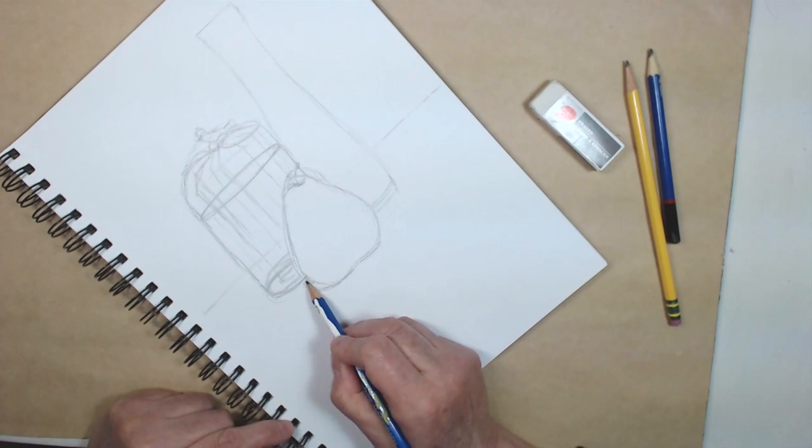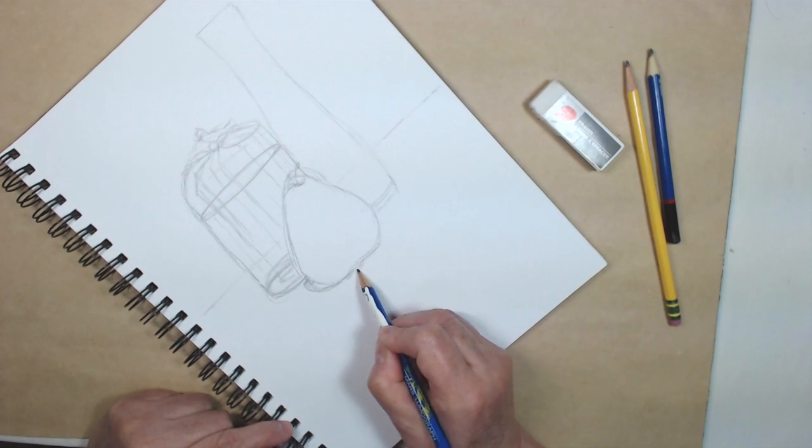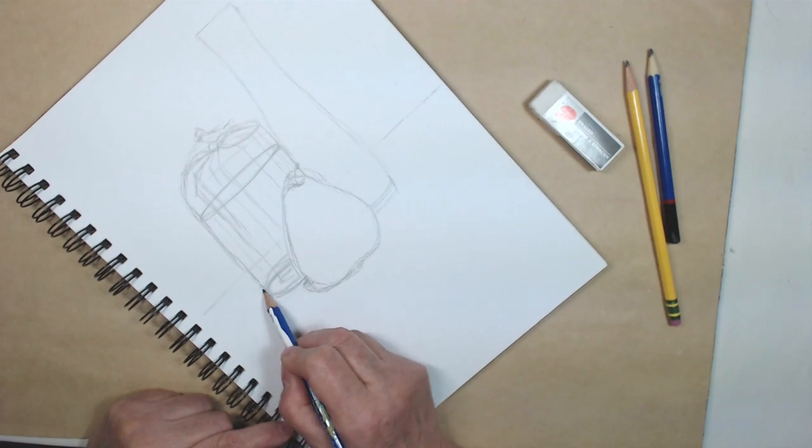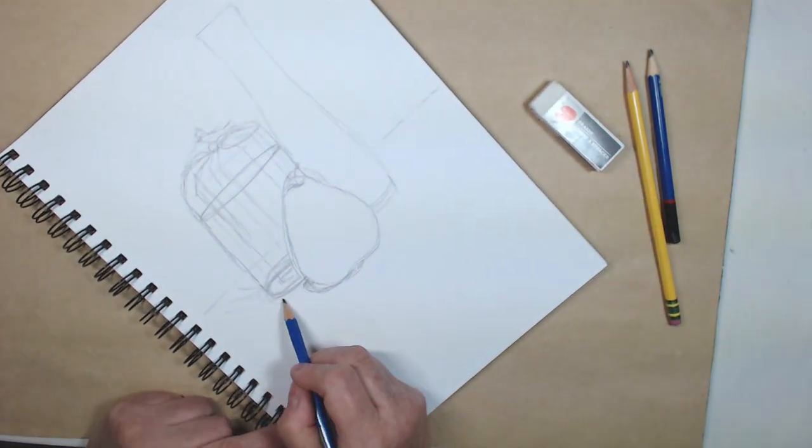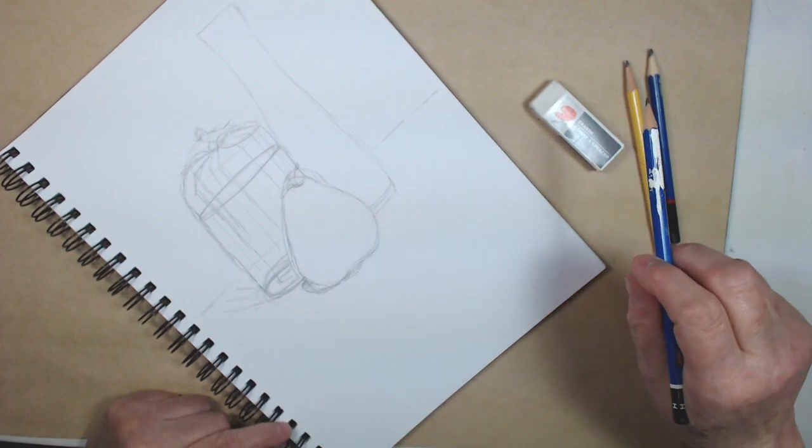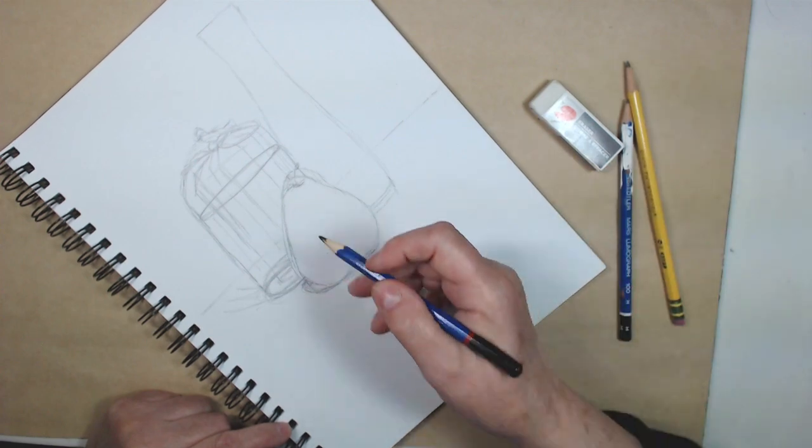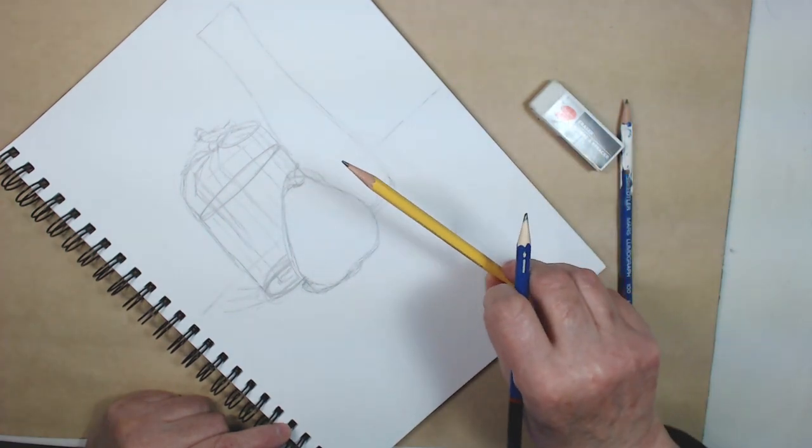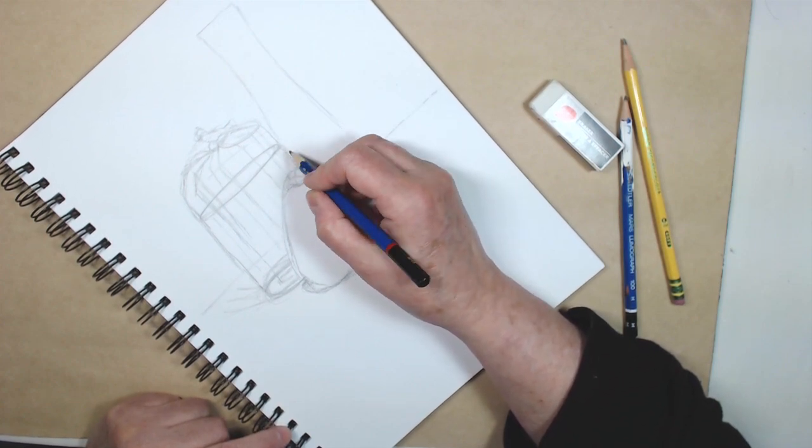So now I'm going to set aside my light pencil and take my slightly darker pencil but if you were using your HB pencil you just keep going. Using my slightly darker pencil I'm going to start adding more details, refining the outline and just starting to finish up my drawing.